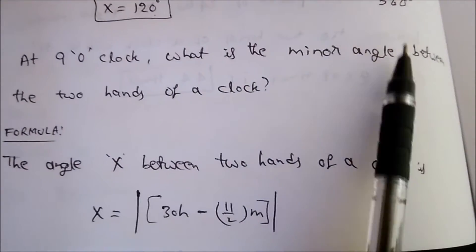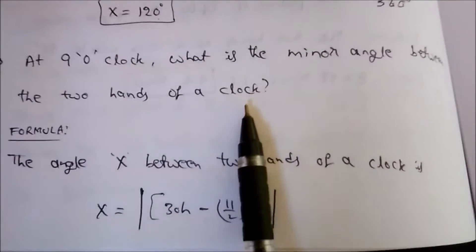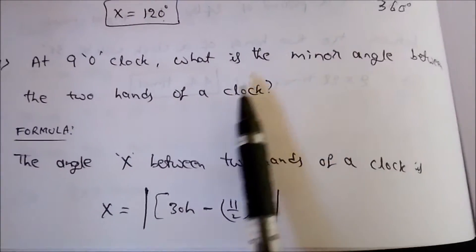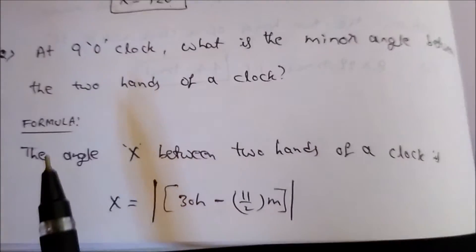At 9 o'clock, what is the minor angle between the two hands of a clock? We need to find the angle between the two hands, the minute and hour hands of a clock. There is a standard formula for this.